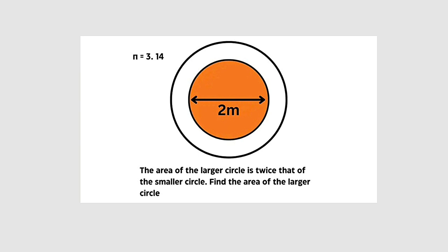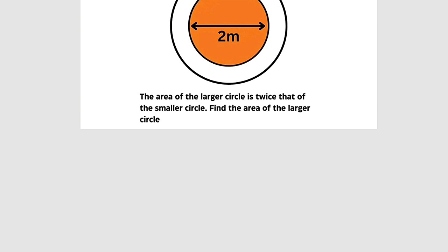So let the area of the smaller circle be denoted by lowercase letter a equal to pi r squared. This is the formula for the area of a circle. Let the area of the bigger circle be denoted by capital A, pi capital R squared.